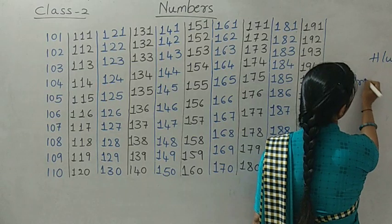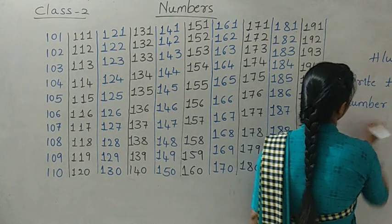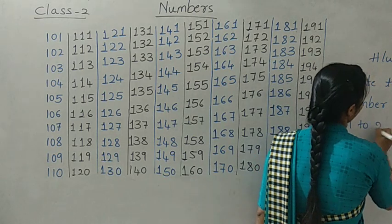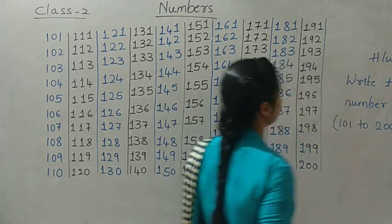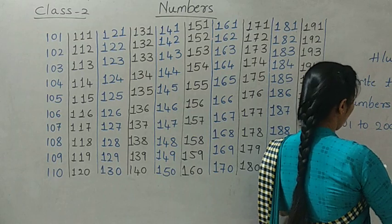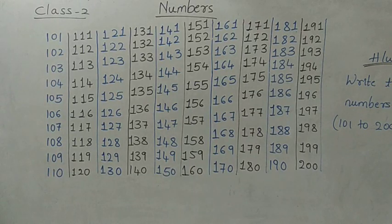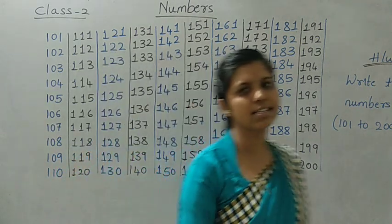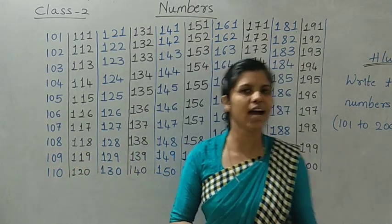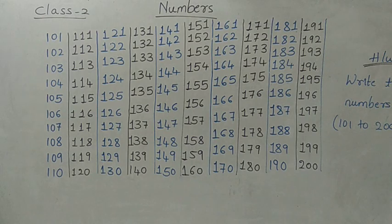Write down the homework. Write the numbers 191 to 200. This is our today's homework. Write down the homework. Okay students, this is our today's class. Thank you. Have a good day — we will see you in the next class. Have a good day. Thanks everyone. Bye.